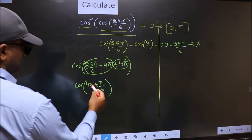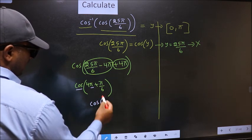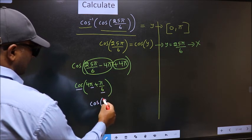Here we have pi. So cos is not going to change. It will remain cos cos. And inside we get this angle pi by 6.